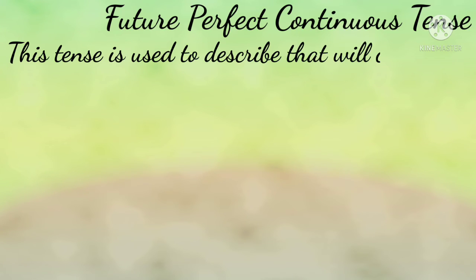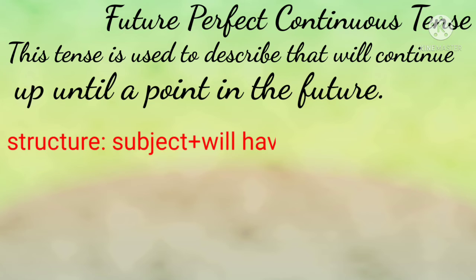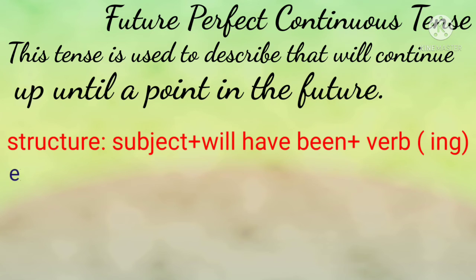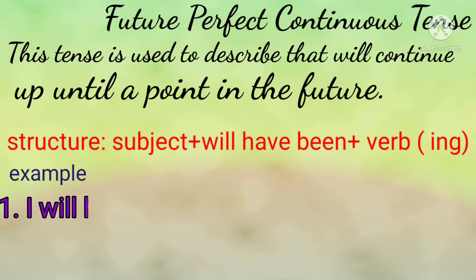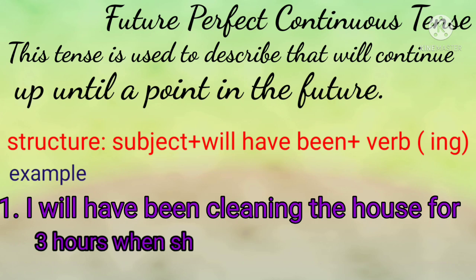Future perfect continuous tense. This tense is used to describe an action that will continue up until a point in the future. Structure: Subject plus will have been plus verb+ing. Example: I will have been cleaning the house for 3 hours when she arrives home.